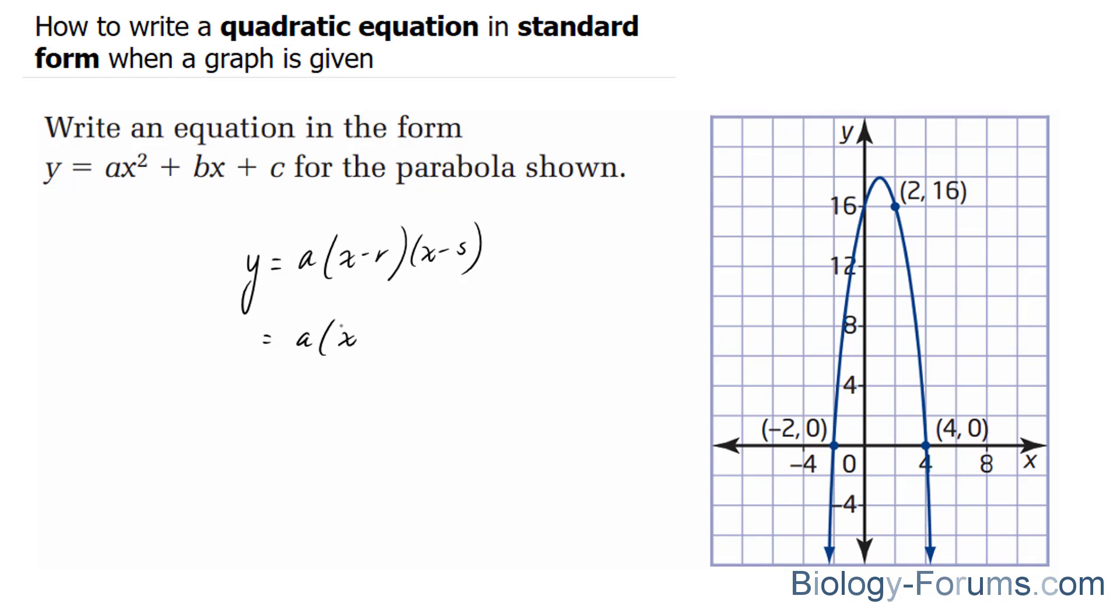x minus negative 2, x minus 4. And we're just going to simplify this: a times x plus 2 times x minus 4.